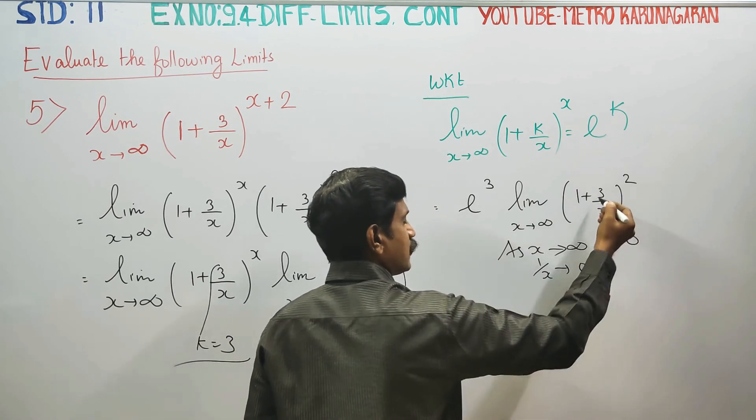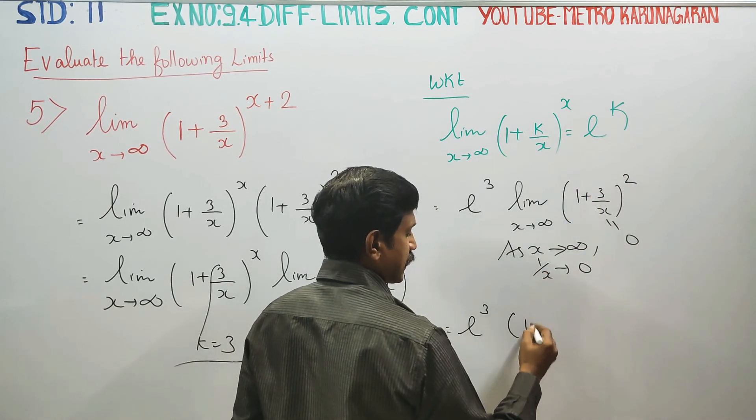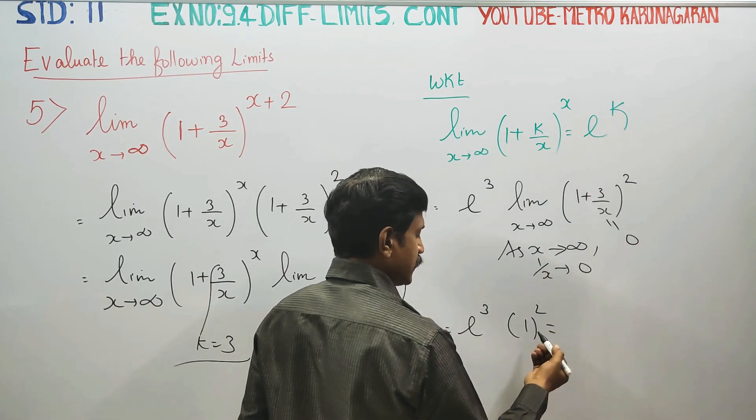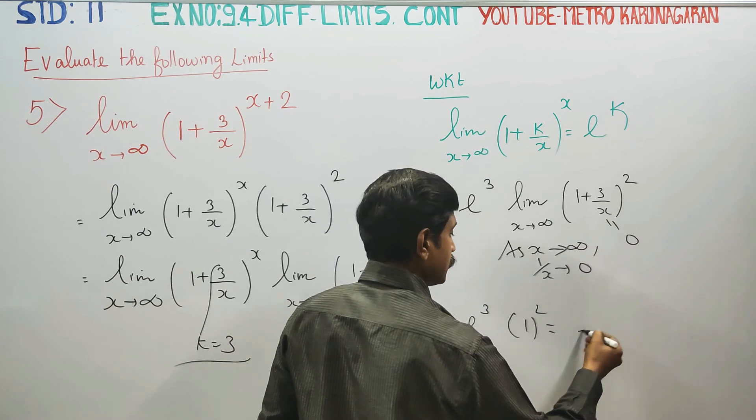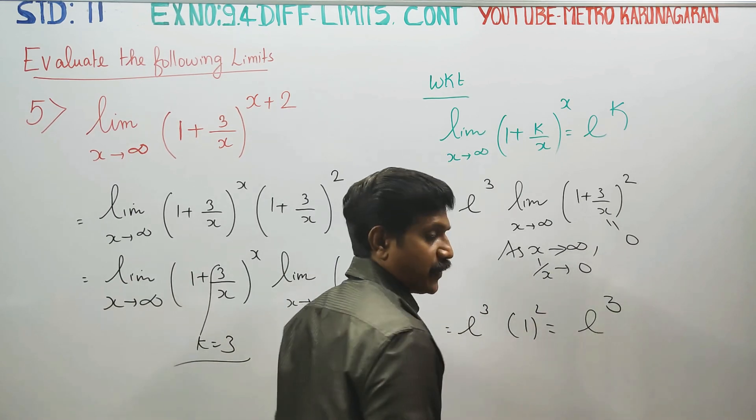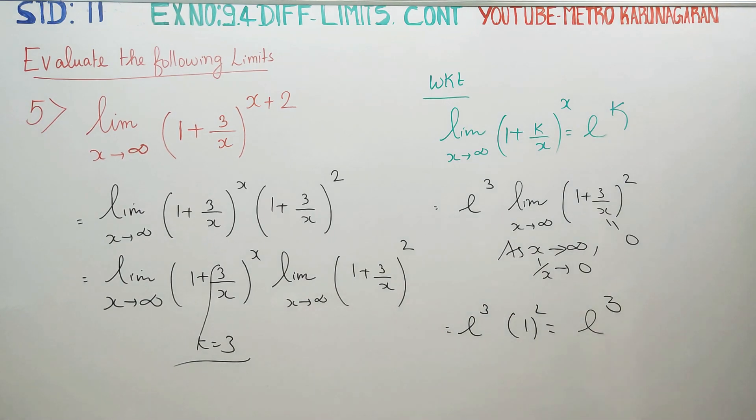For the second part, (1 + 0)^2 = 1. Therefore, your final result is e^3. Okay, thank you.